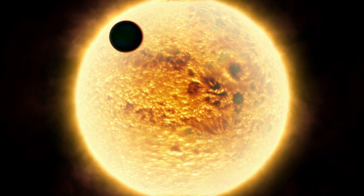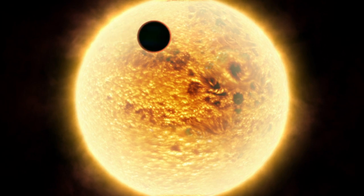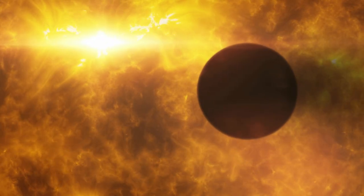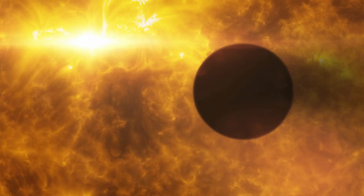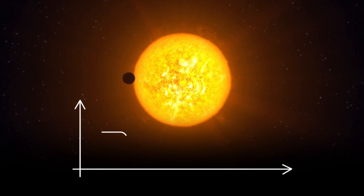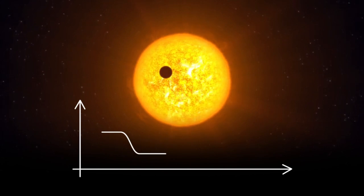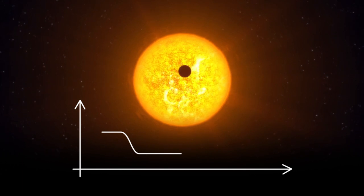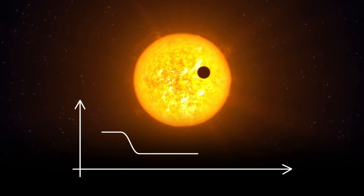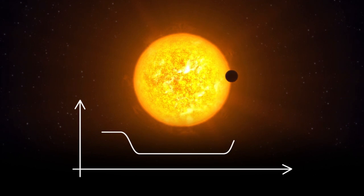Transits offer one of the best chances to study exoplanets. This is when a planet crosses between its host star and Earth, temporarily reducing the star's apparent brightness. The duration and change in intensity of the light curve give astronomers clues about the planet's size and orbit.